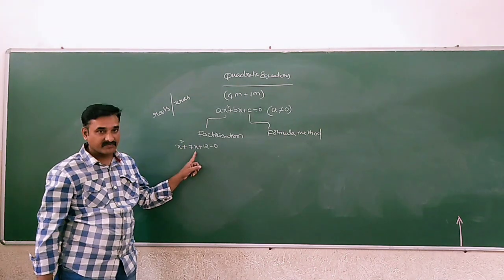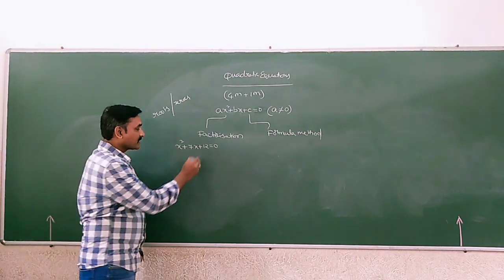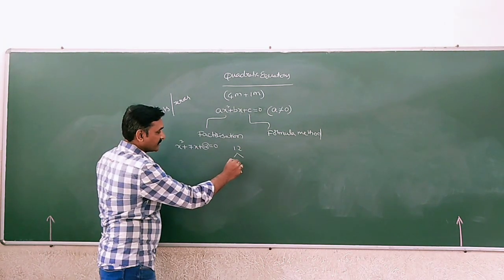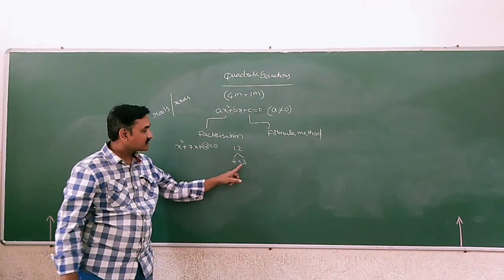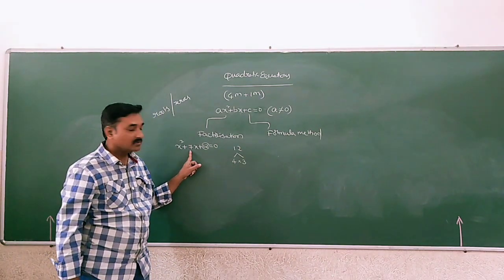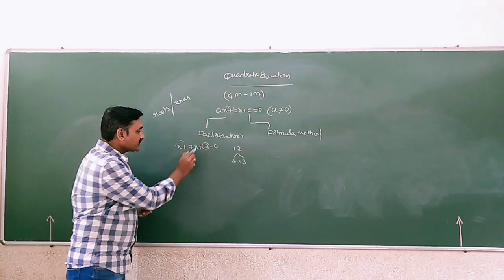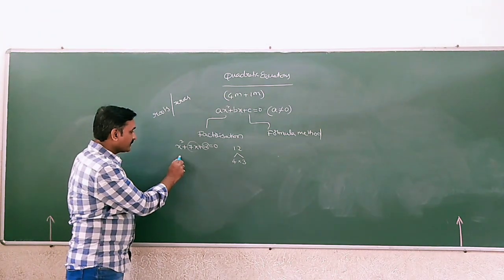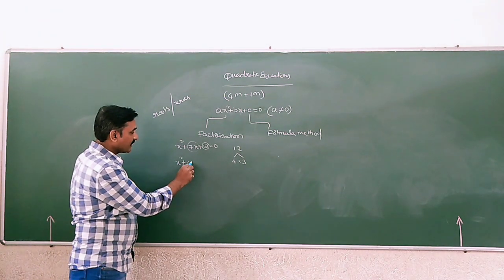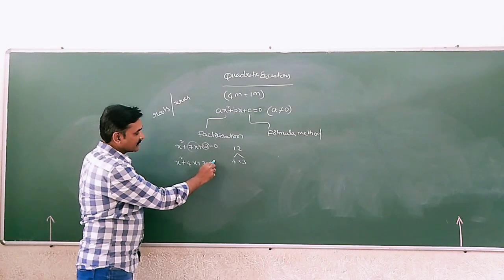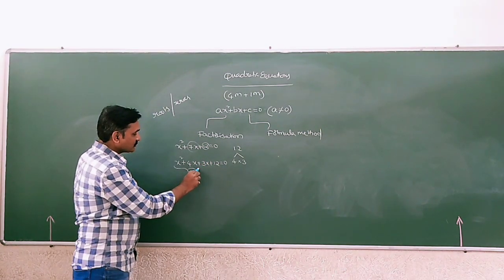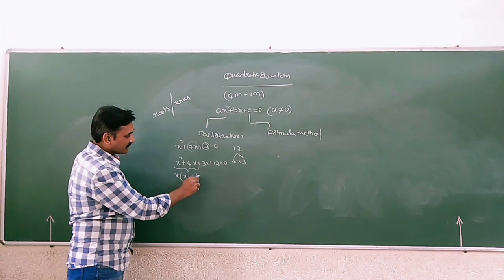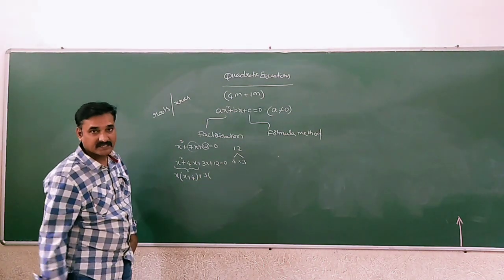x² plus 7x plus 12 equals to 0. Identify the constant — here the constant is 12, so we can write 12 as 4 into 3. If we add, 4 plus 3 equals to 7. So instead of 7, we can replace with 4 and 3. We can write x² plus 4x plus 3x plus 12 equals to 0. In the first two terms, we have x as common, so x(x plus 4).